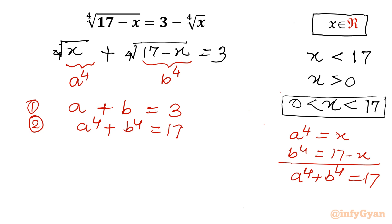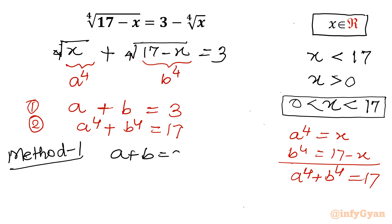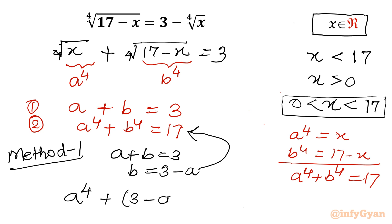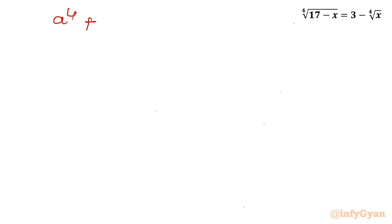Now method number 1: the binomial expansion method. In this method I will use equation 1, which gives a plus b equal to 3, so b equals 3 minus a. Substituting into equation 2 gives a⁴ plus (3 minus a)⁴ equal to 17. I will expand this to frame a polynomial equation.